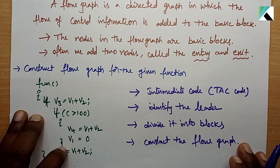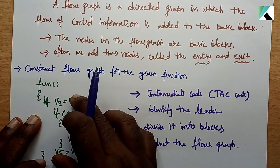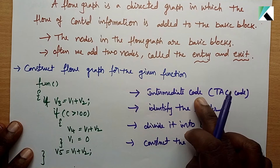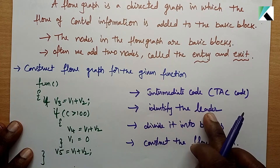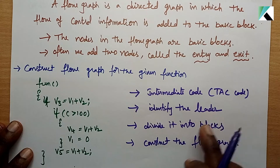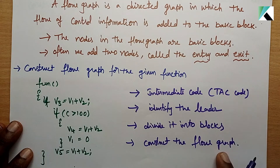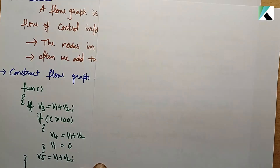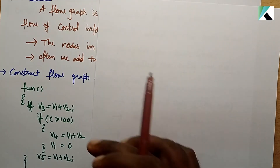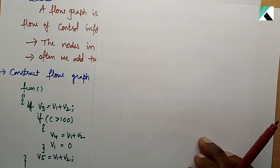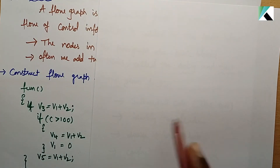So if you want to solve the problem, we need four steps: intermediate code generation, identify leaders, divide into blocks, and construct the flow graph. This is the code snippet — this is the TAC code.